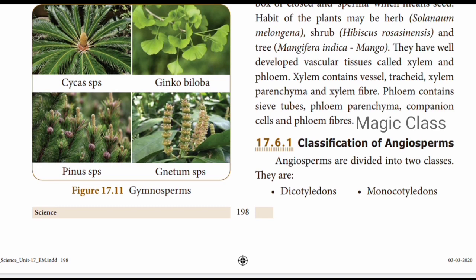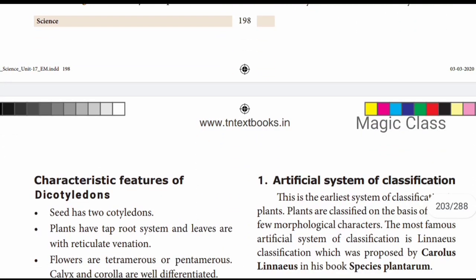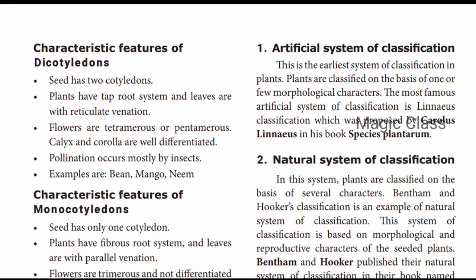Angiosperms are classified into two groups: dicotyledons and monocotyledons. Dicotyledon characteristics: seeds have 2 cotyledons, they have a tap root system, leaves have reticulate venation, and the flowers are tetramerous or pentamerous. The calyx and corolla are well differentiated.